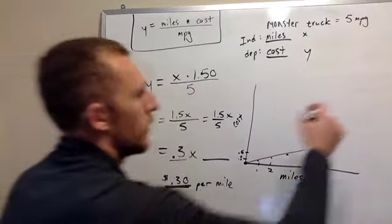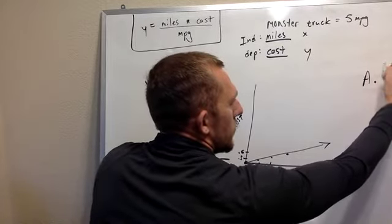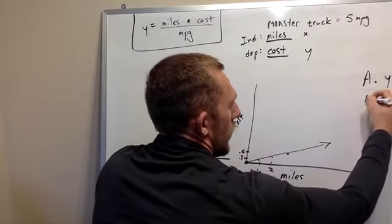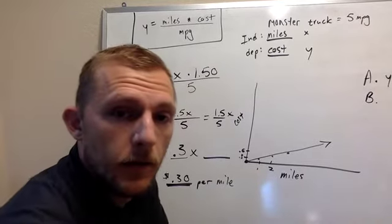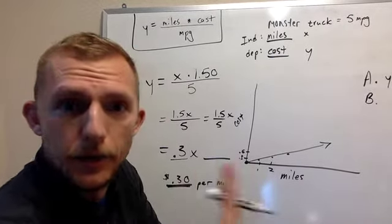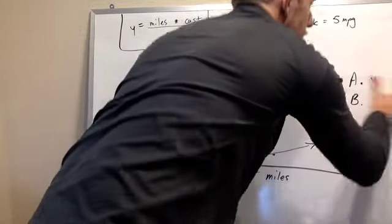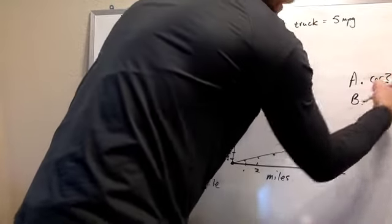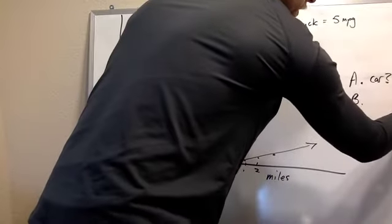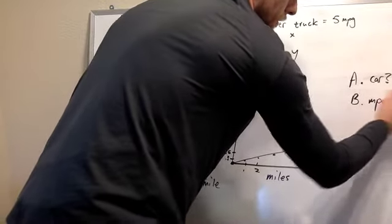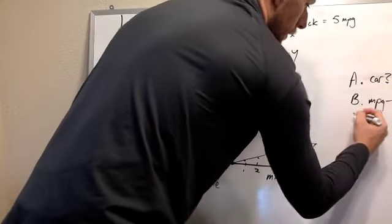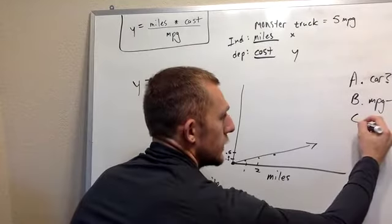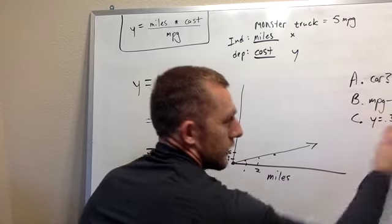So this is what I'm going to ask from you. A is going to be your equation, which is y equals 0.3x. Oh my goodness, I am so sorry. Your a is not that. Your a, I need you to figure out is, what is your car? And so mine is a monster truck, mpg for your monster truck, which is 5. Your c is going to be your equation, so y equals 0.3x.